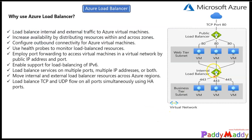At the front end, consider a public load balancer where a public IP is associated. It enables outbound communication for your virtual machines — both public and internal — by translating their private IP addresses to the public IP address assigned to the public load balancer.